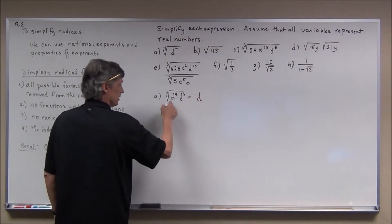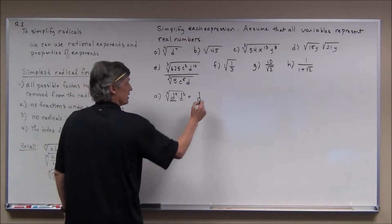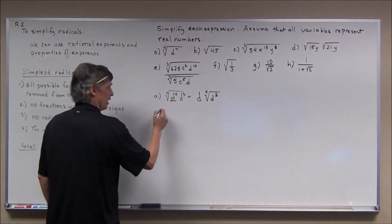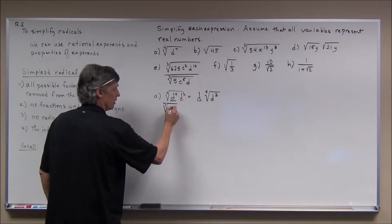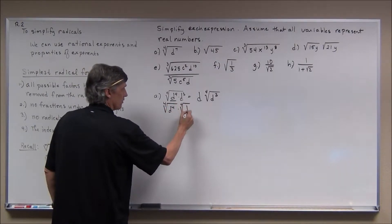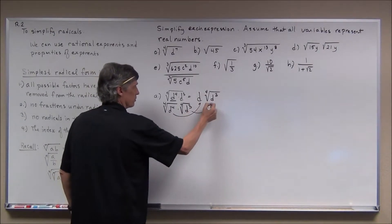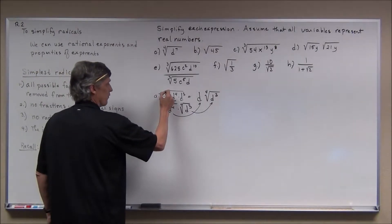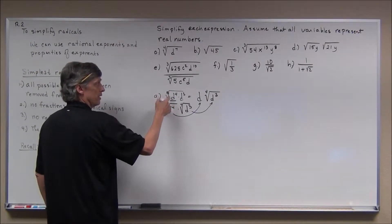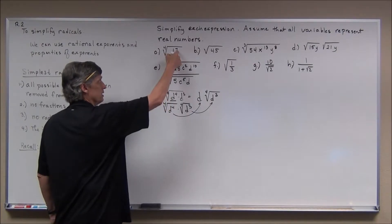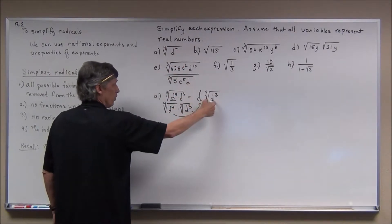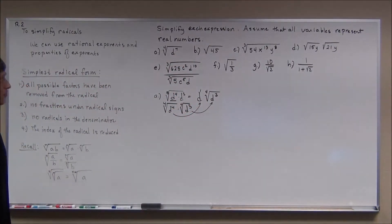This equals D times the fourth root of D to the third power. You can break it apart: the fourth root of D to the fourth, times the fourth root of D to the third. There's a little shortcut — think of the index four as a divisor. Dividing four into seven: four goes into seven one time, so one factor of D comes out; with three left over, three factors of D remain inside.